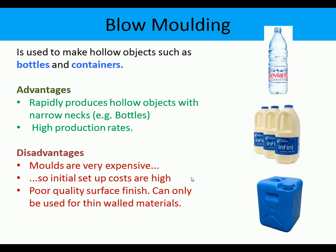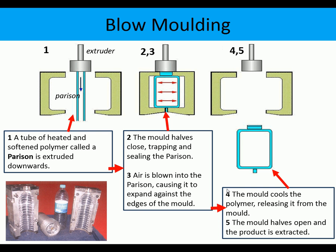Blow molding is a process used to make mainly hollow objects like bottles and containers. Advantages include very high production rates, making it another mass production process. Disadvantages, like injection molding, are that molds are very expensive with high initial setup costs. Unlike injection molding, the surface finish is often poor and it can only be used for thin-walled materials, such as PET bottles.